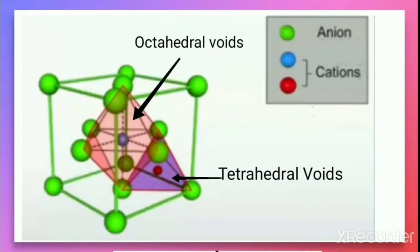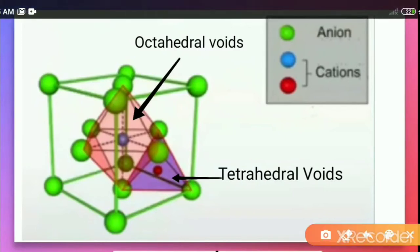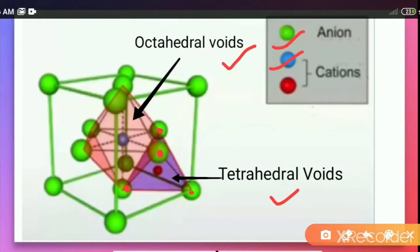Let us consider an arrangement in which the tetrahedral voids and octahedral voids are shown through shading. Tetrahedral voids are found between 4 spheres — counting 1, 2, 3, 4 — and the vacant space between these 4 spheres is called a tetrahedral void, shown in light violet shading. The octahedral void is shown in light pinkish shading and is formed between 6 particles or 6 spheres. Let us find out the arrangement of the particles, anions and cations, in this arrangement.